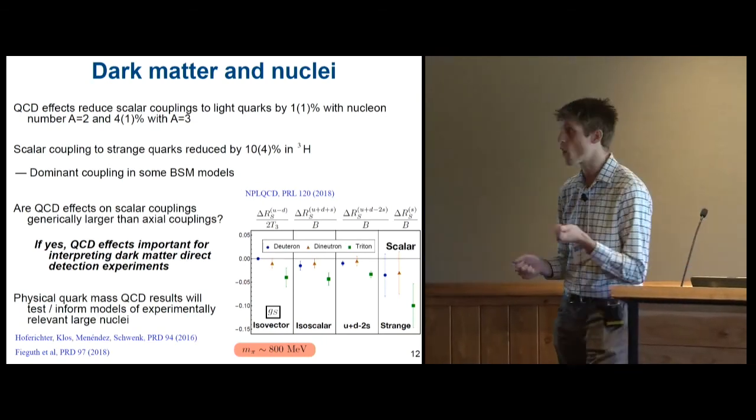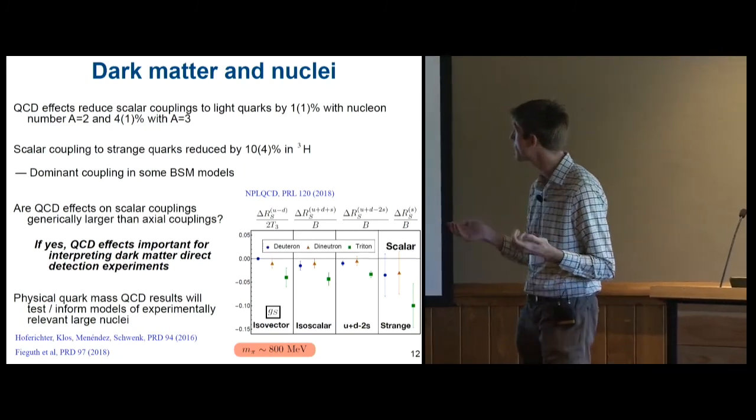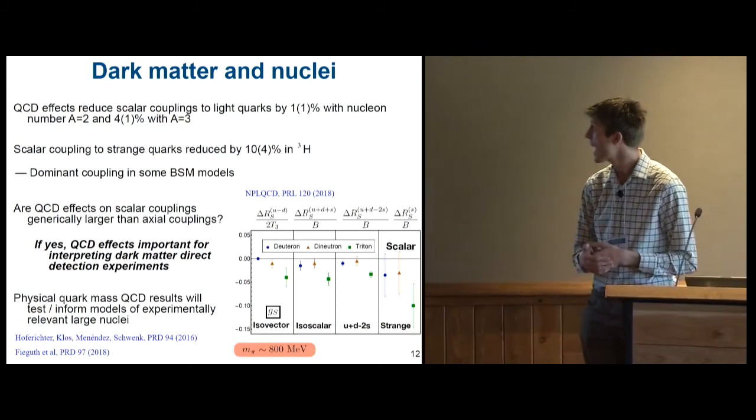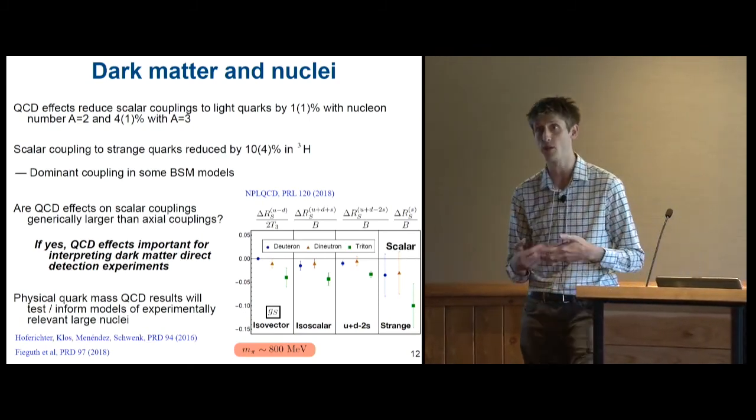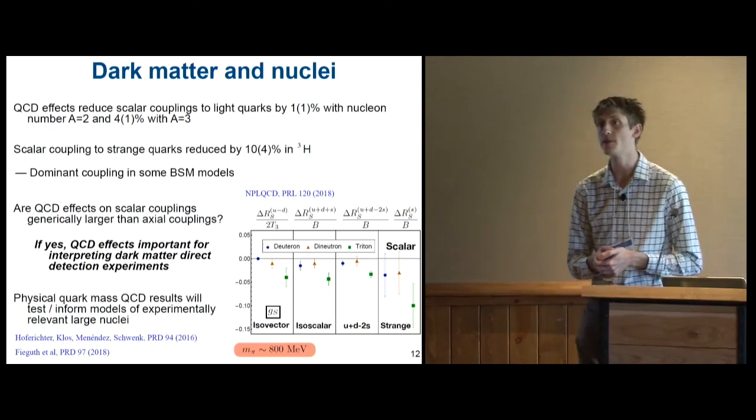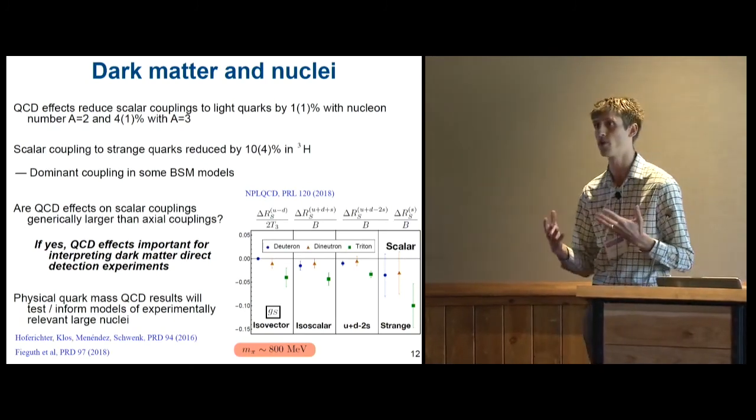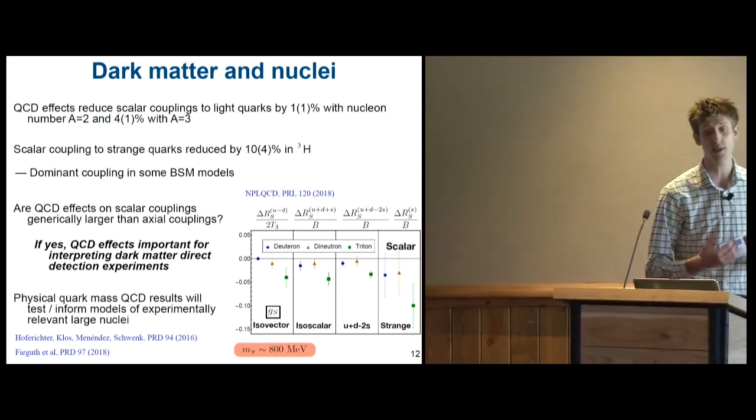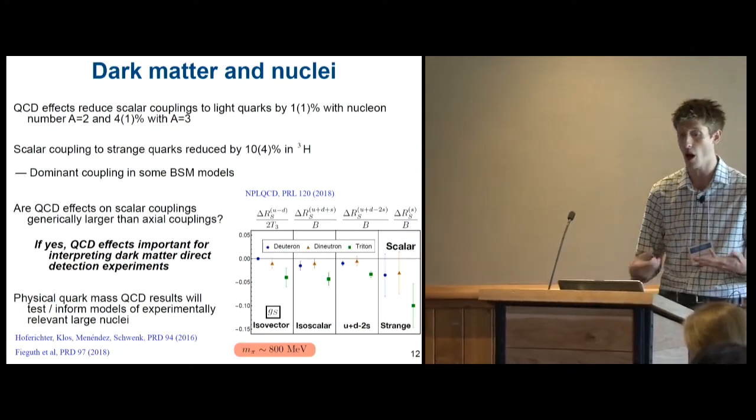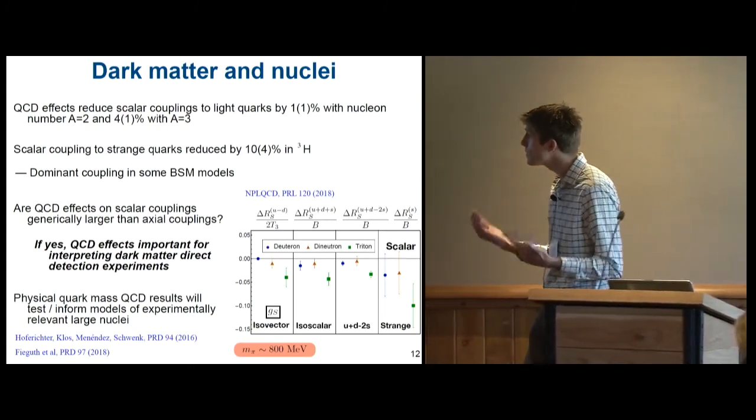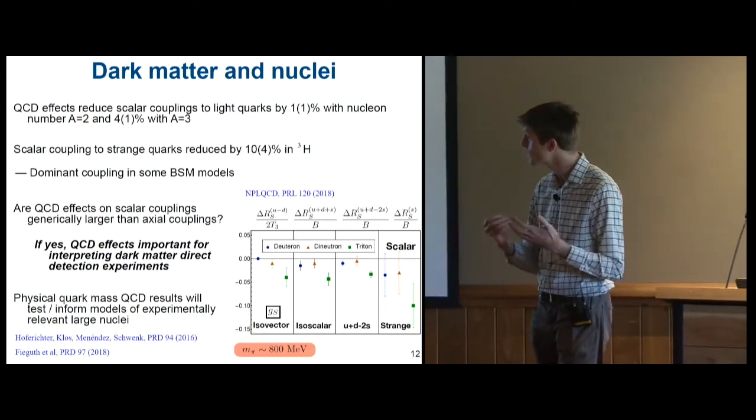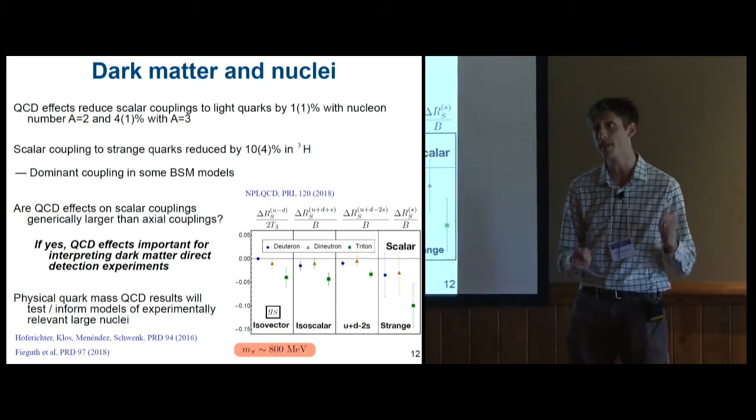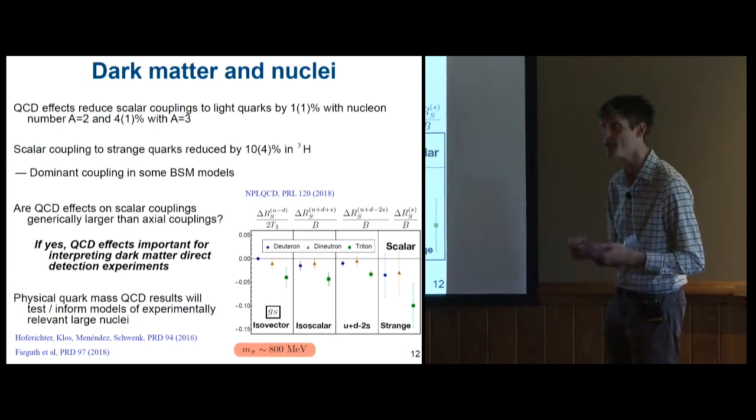And for light quarks coupling to a scalar field, it's a 1% effect in the deuteron, a 4% effect in the triton. And for couplings to strange quarks, these effects are about 10%. And 10% is nothing to write home about for results that are usually presented on a log plot. But if it's true that QCD effects on scalar couplings are generically larger than axial couplings, then this would be important for trying to really reliably understand these dark matter direct detection experiments and understand what theories we're actually excluding with the data that we have today.